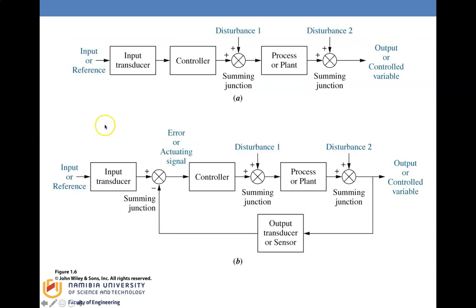In the block diagram of an open loop control system, you have your reference input, a controller, and then a summing point that acts as a comparator combining the controller output with a disturbance. This feeds into the process or plant, which also encounters another disturbance at the output, producing the output or control variable. There is no feedback path from output back to input.